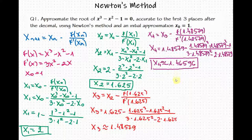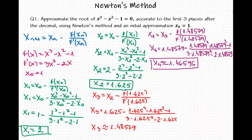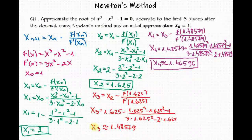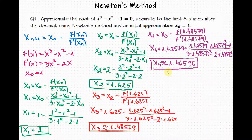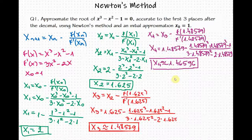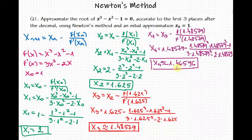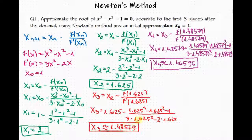Let's now compare x sub 3 and x sub 4. The problem asks for accuracy to the first three places after the decimal. Looking at x sub 3 and x sub 4, we can see only one digit is the same — the first digit after the decimal. That means we have to keep going with the solving.